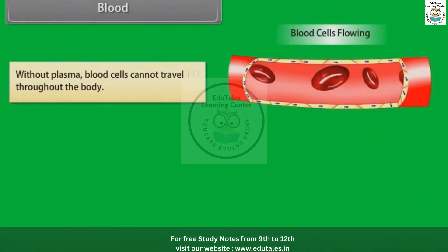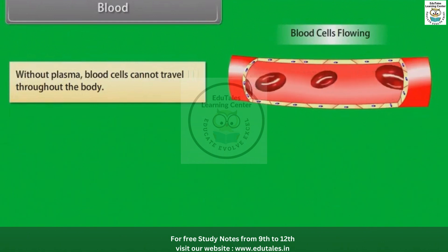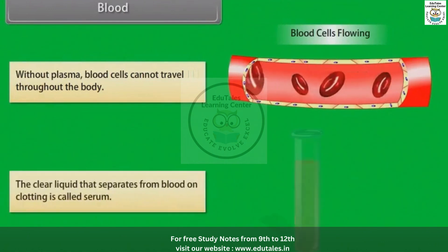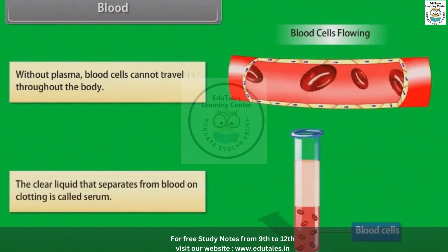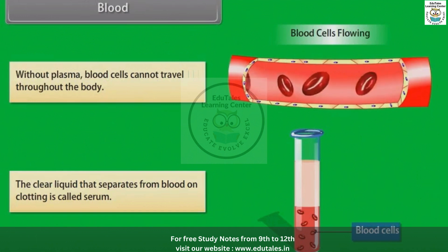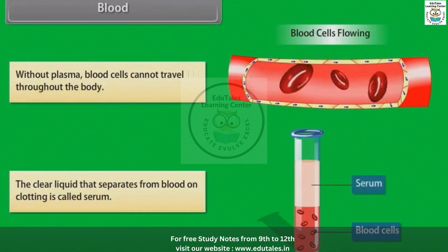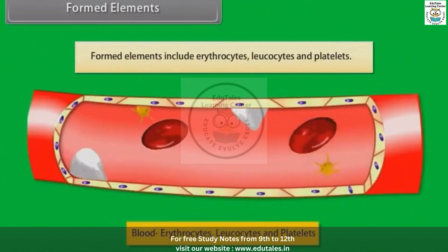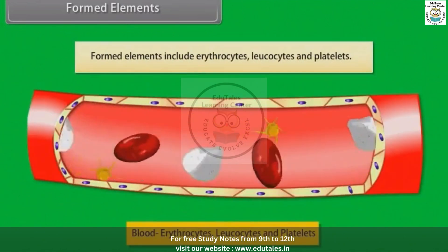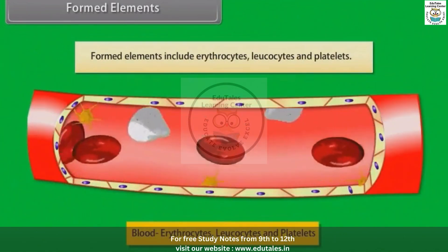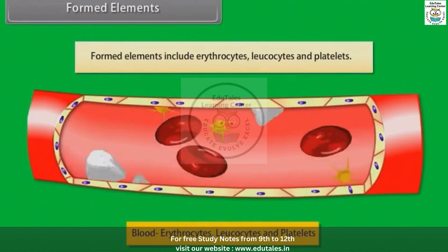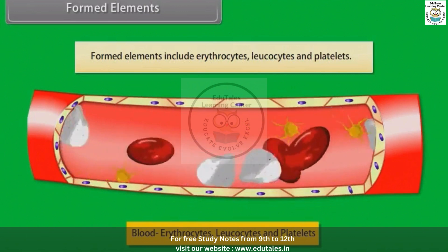Fibrinogen helps in blood clotting. Globulins are involved in the defense system of the body. Albumins are responsible for maintaining water balance in the blood. Without plasma, blood cells cannot travel throughout the body. The clear liquid that separates from blood on clotting is called serum. Formed elements include erythrocytes, leukocytes, and platelets.